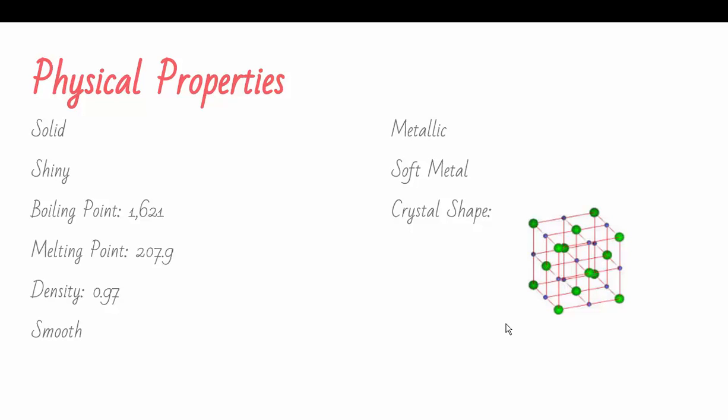The melting point is 207.9. The density is 0.97. Sodium is smooth and metallic, and also a soft metal. And as you can see in the picture, that is the crystal shape of sodium.